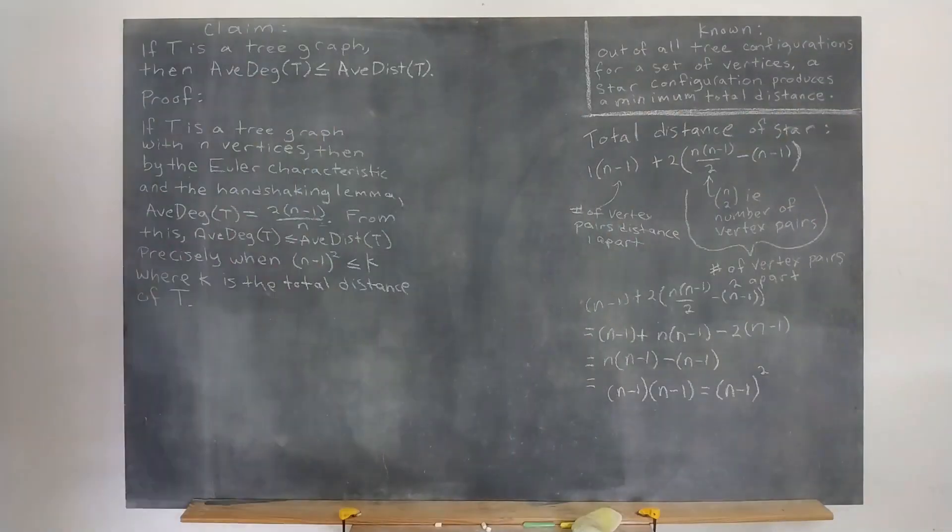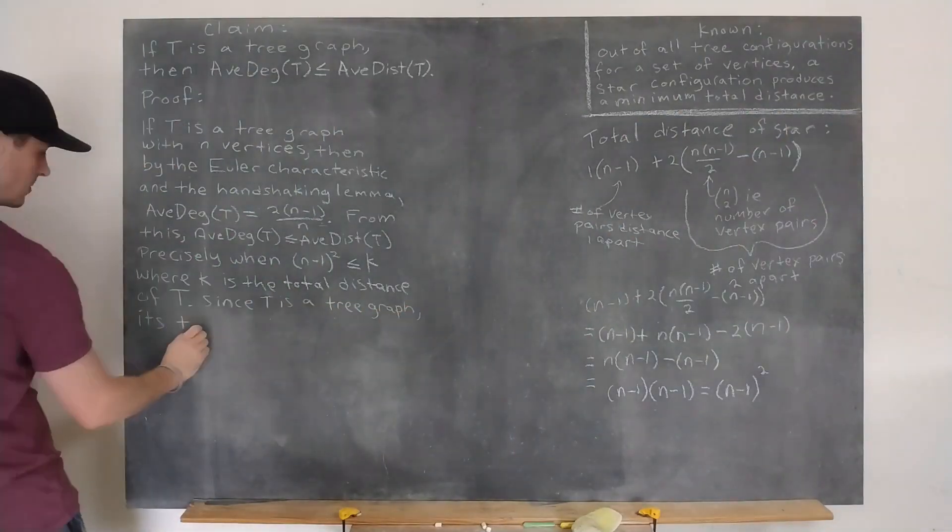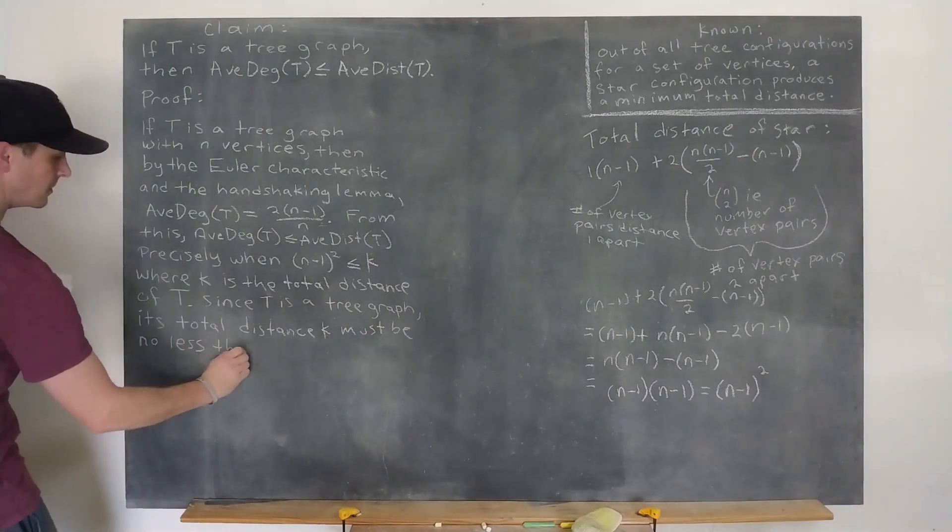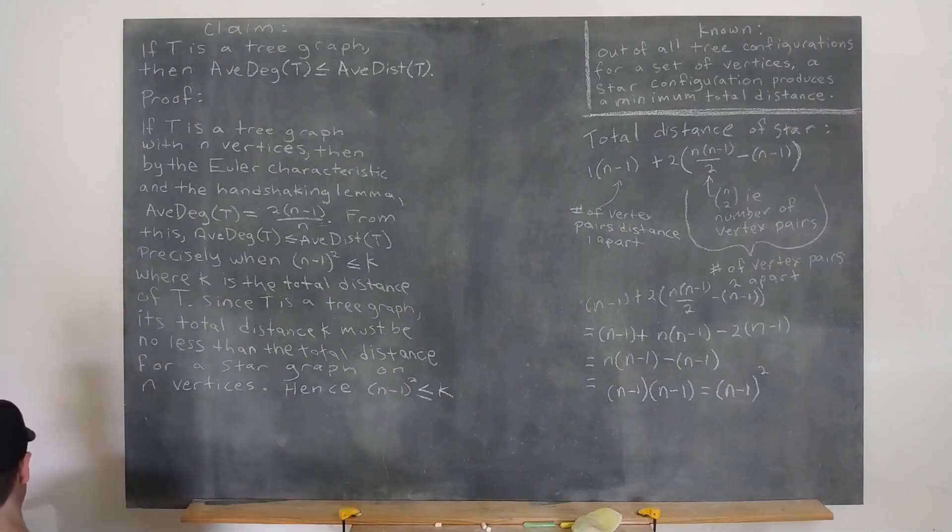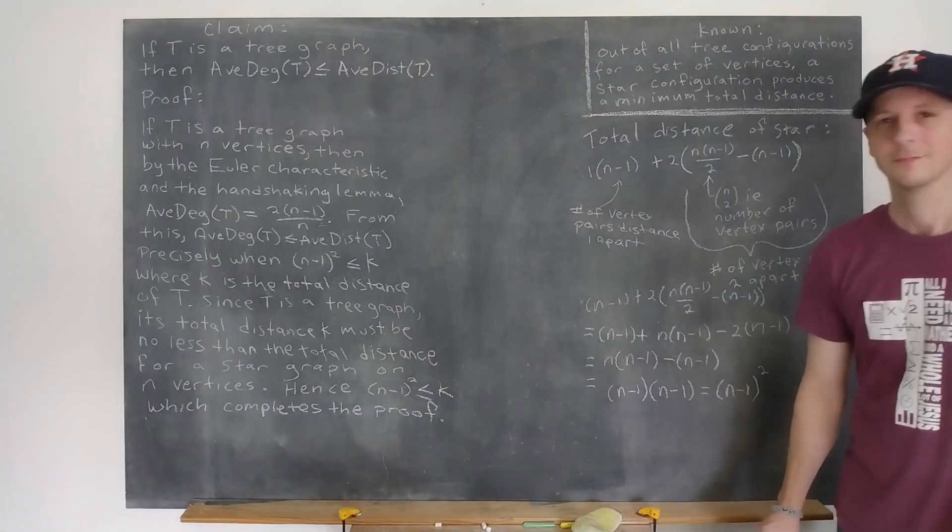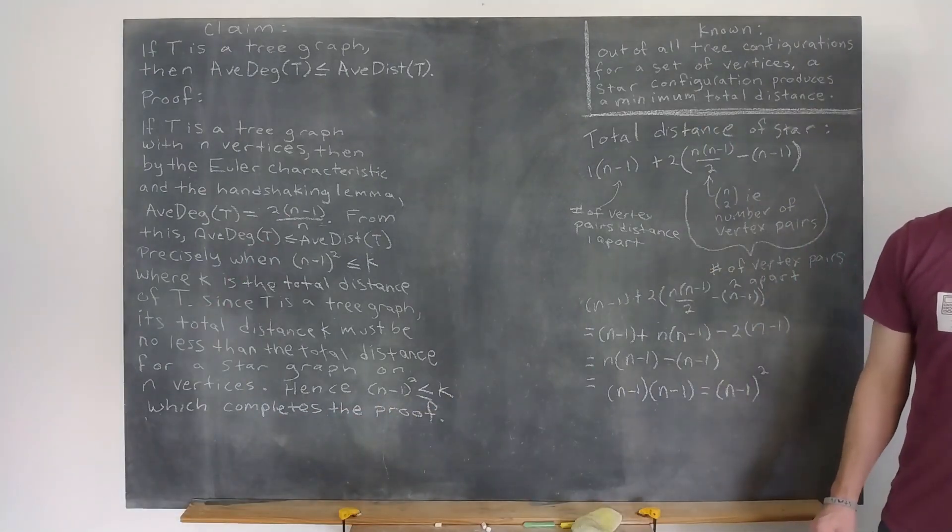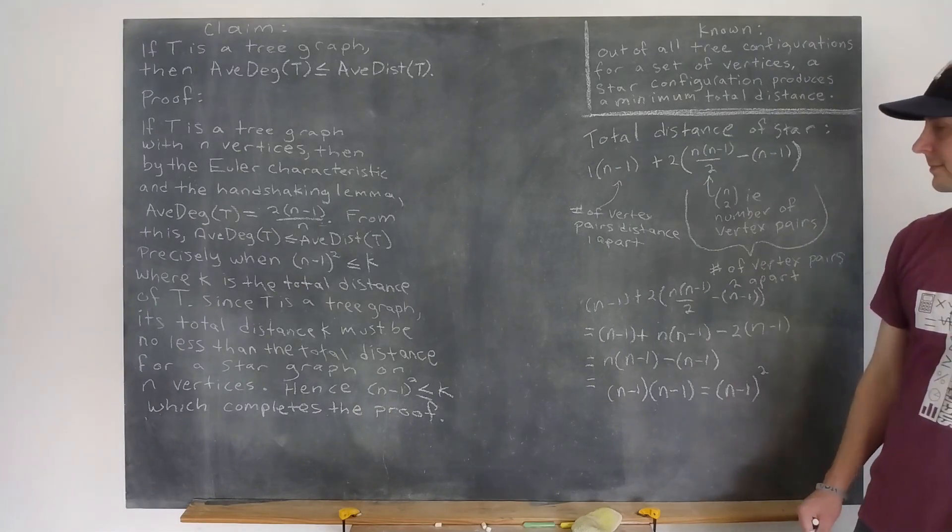So it's been shown that the total distance k of tree graph t must be greater than or equal to n-1 quantity squared, which is equivalent to our conjecture that the average degree of t is no more than its average distance. That's a good place to stop. And so we'll see you in the next video.